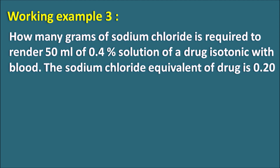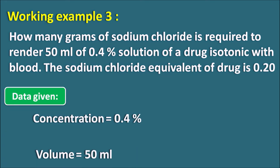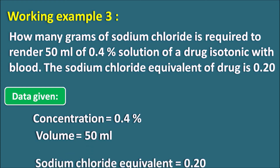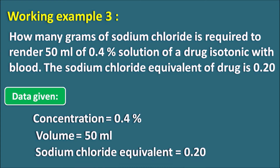Working Example 3: How many grams of Sodium Chloride is required to render 50 ml of a 0.4% solution of a drug isotonic with blood? The Sodium Chloride Equivalent of the drug is 0.20. Data given: concentration is 0.4%, volume is 50 ml, and Sodium Chloride Equivalent E is 0.20. We will calculate using both the three-step method and the simple formula.